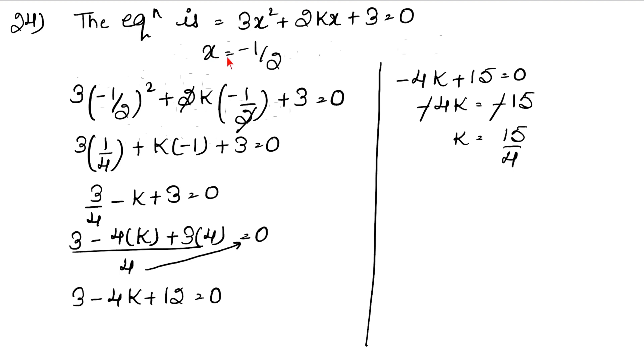One more repeat: this is the root, x minus 1 upon 2 is the root of this equation. If it is root, then we have k value. So when we have root, then we have to keep x and k value. Answer.